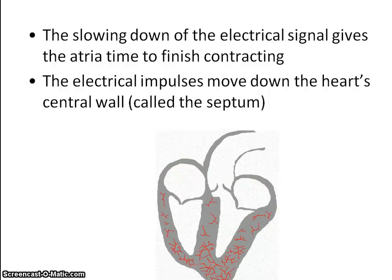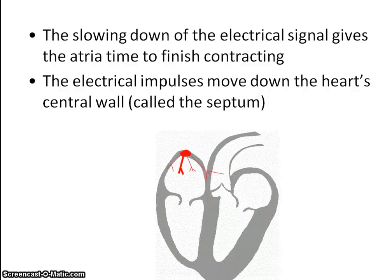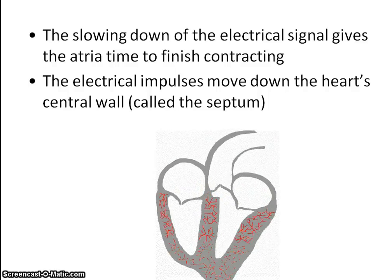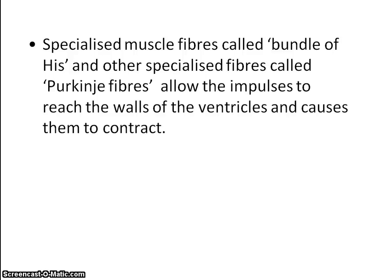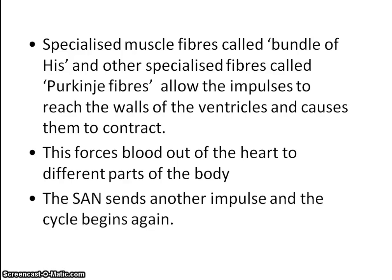This slowing down gives the atria time to finish contracting. As you can see from the animation, the electrical impulses move down the center of the central wall of the heart, and travel through specialized muscle fibers called the bundle of His and others called the Purkinje fibers. These enable the ventricles to contract, forcing blood out of the heart into different parts of the body. Then the cycle starts again.